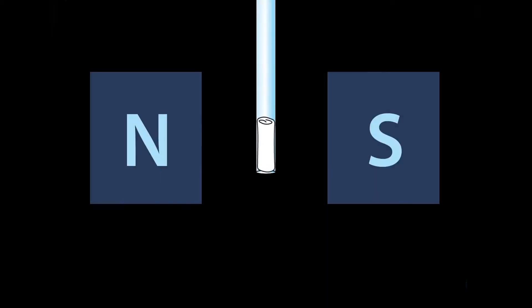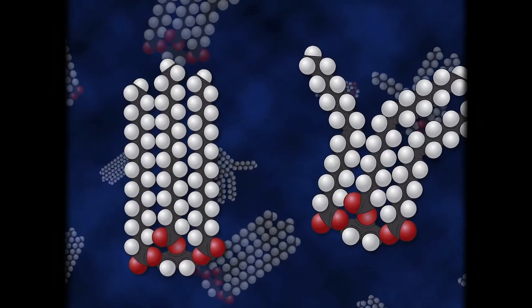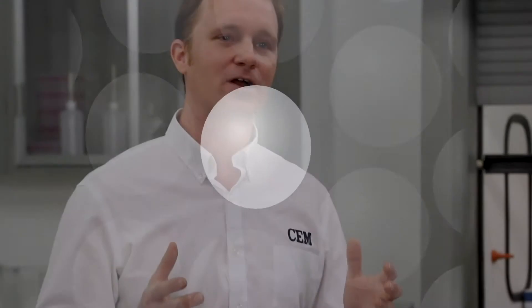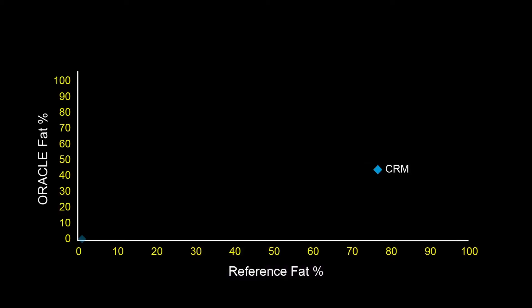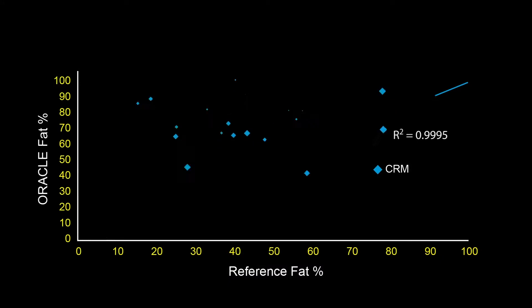The Oracle universal fat analyzer is based on NMR technology, but unlike other NMR fat analyzers on the market that rely on free induction decay or spin echo pulse sequences, the Oracle uses a proprietary pulse sequence that enables fat analysis with no method development and no calibration.